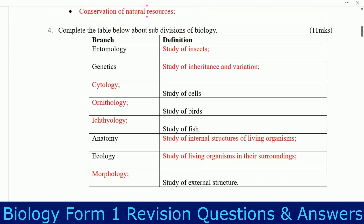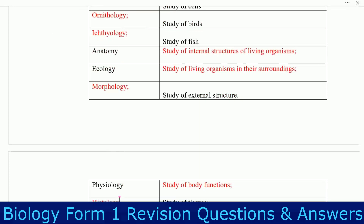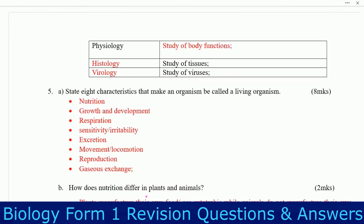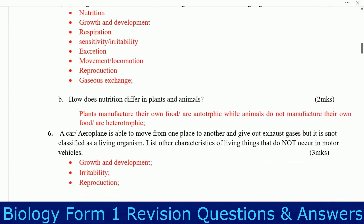Question four: complete the table about subdivisions of biology — branch and definition. Entomology is the study of insects. Genetics is the study of inheritance and variation. Cytology is the study of cells. Ornithology is the study of birds. Ichthyology is the study of fish. Anatomy is the study of internal structures of living organisms. Ecology is the study of living organisms in their surroundings. Morphology is the study of external structure. Physiology is the study of body functions. Histology is the study of body tissues. Virology is the study of viruses.